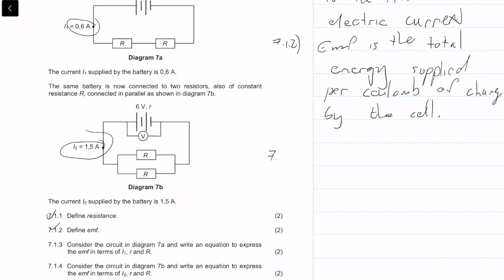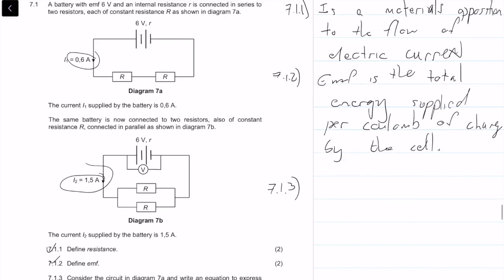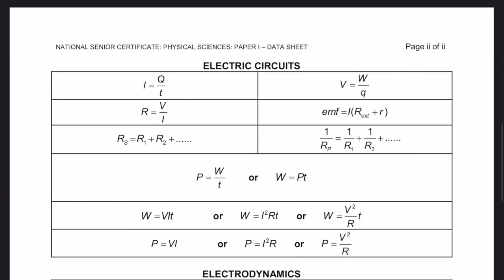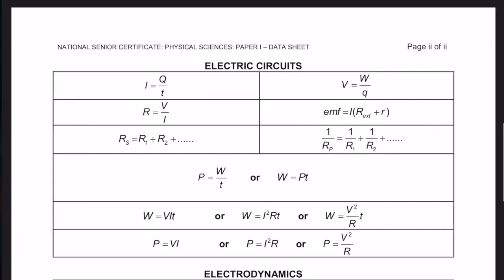Question 7.1.3 says consider the circuit in diagram 7a, the top one, and write an equation to express the emf in terms of i1, r, and big R. From the formula sheet, second column, second row, we can see that emf equals i times r external plus r.